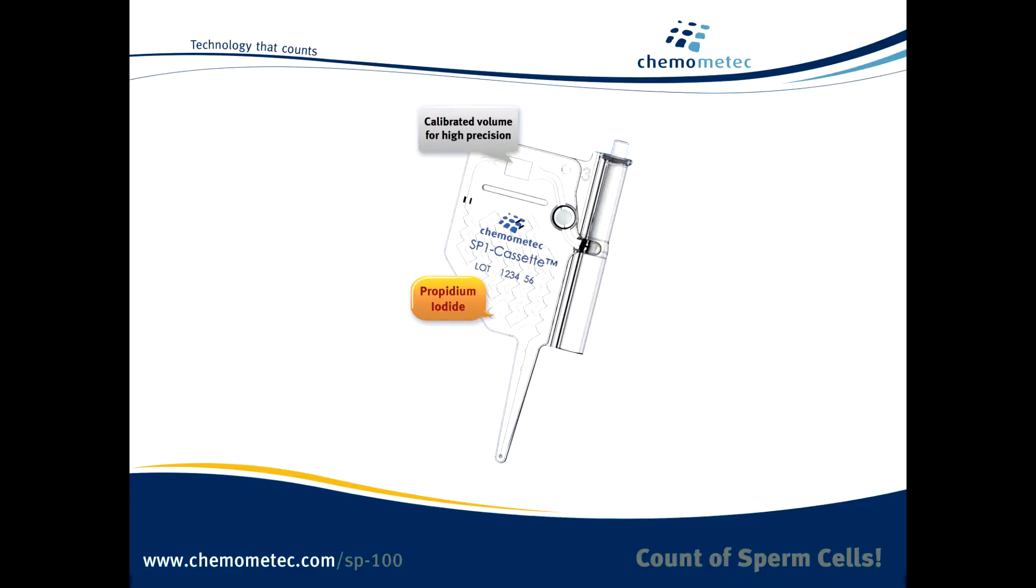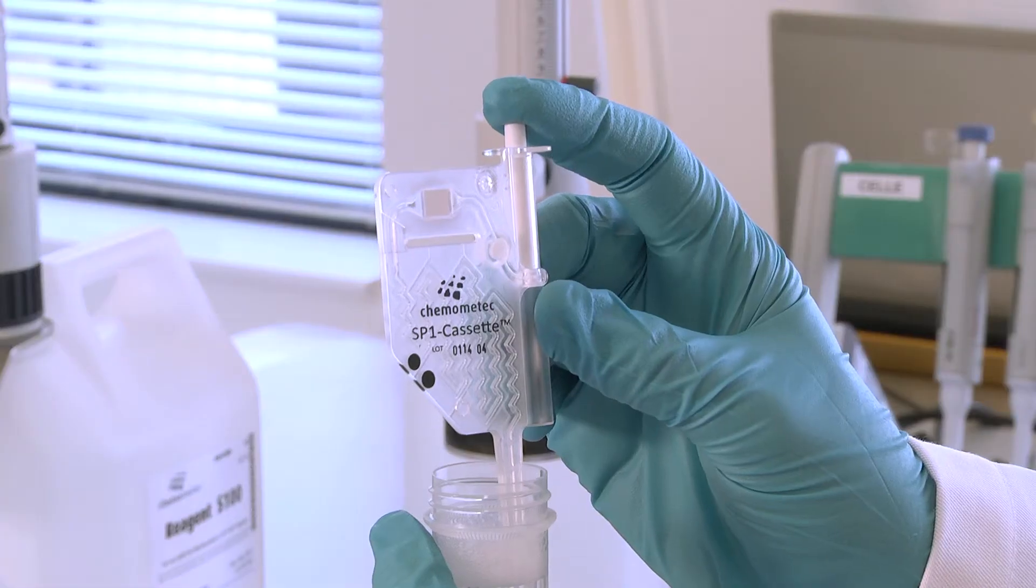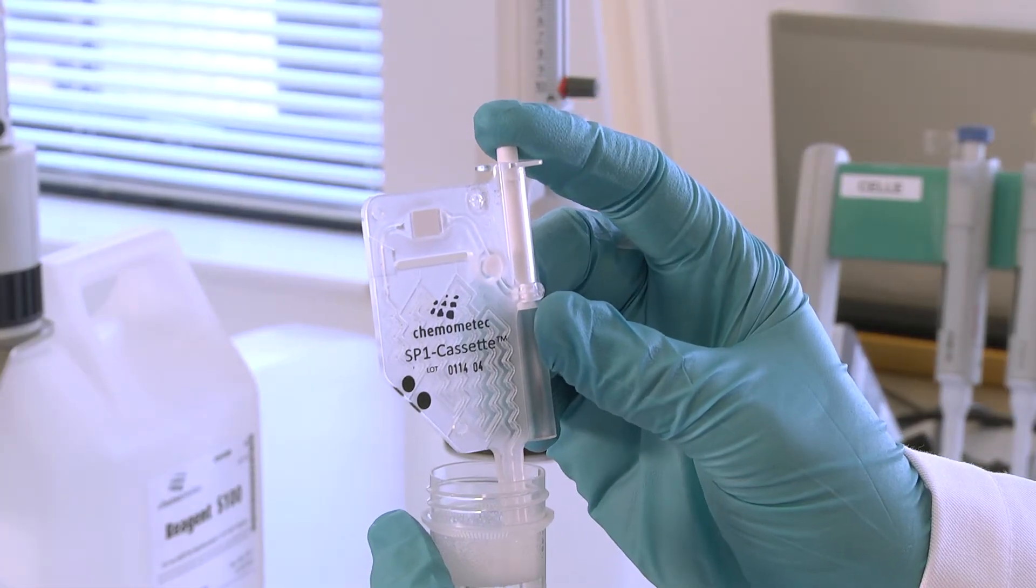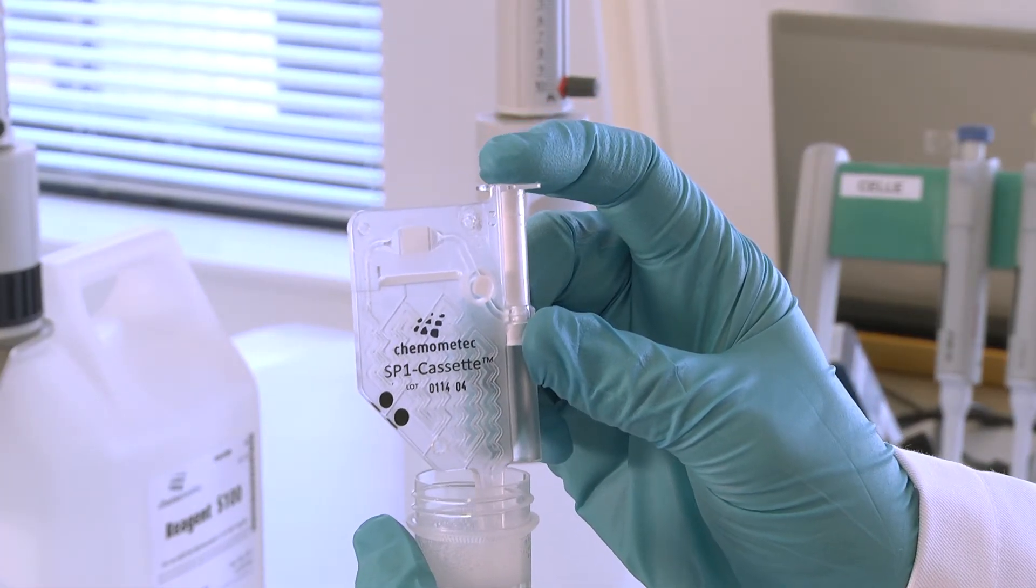The secret is the SP cassette. It contains the dye that stains the DNA of the sperm cells. The volume is pre-calibrated, eliminating human subjectivity and everything is self-contained so there's no exposure to hazardous materials.